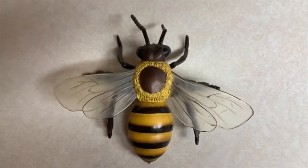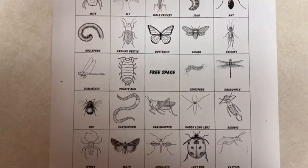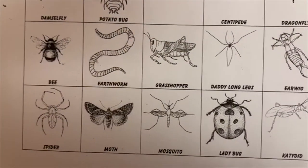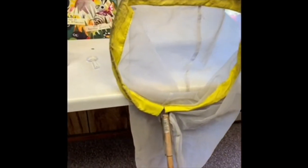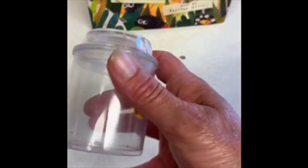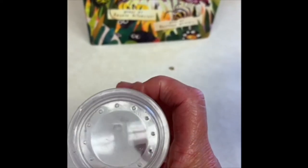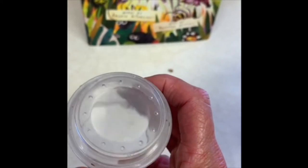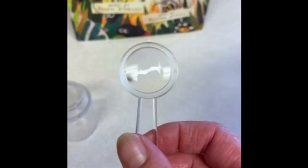Insects are not quite the same as some of the other critters you might find when you go on a bug hunt. These are some of the things you'll want when you go out in your backyard looking for bugs. You'll want a bug catcher box — it has a magnifying glass on the top so that you can see the bug a little bit closer when you catch them.